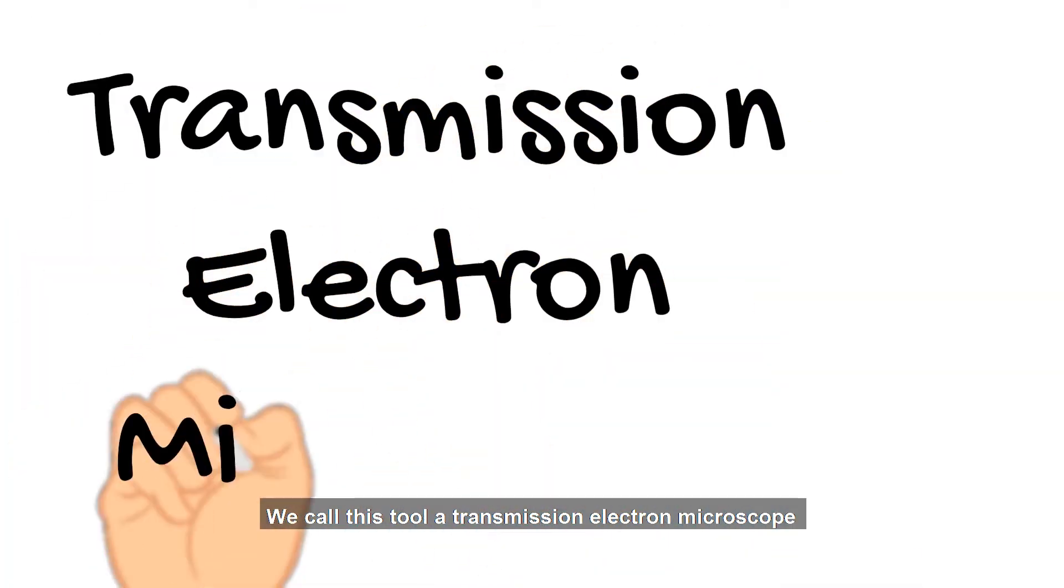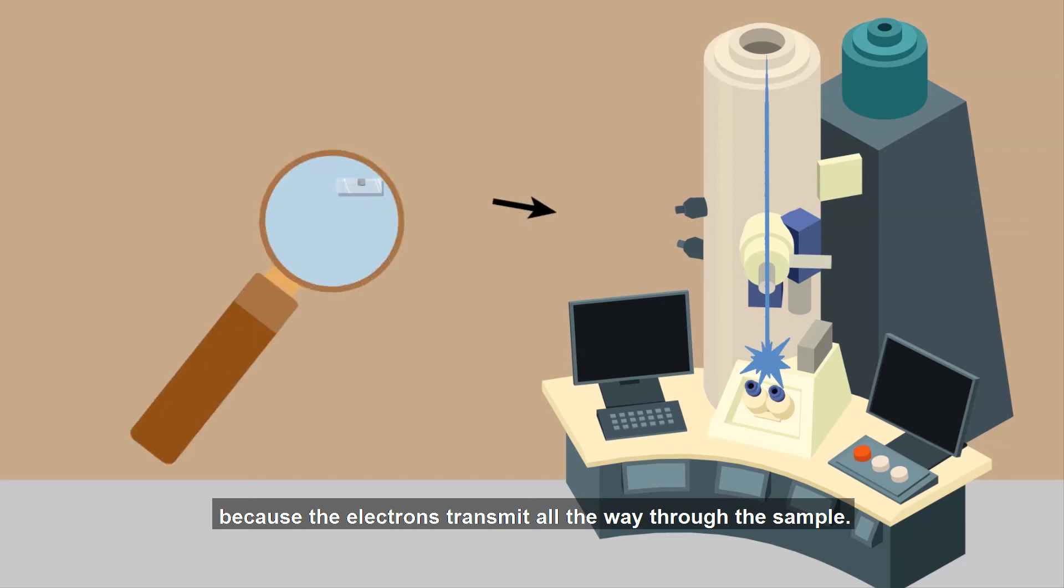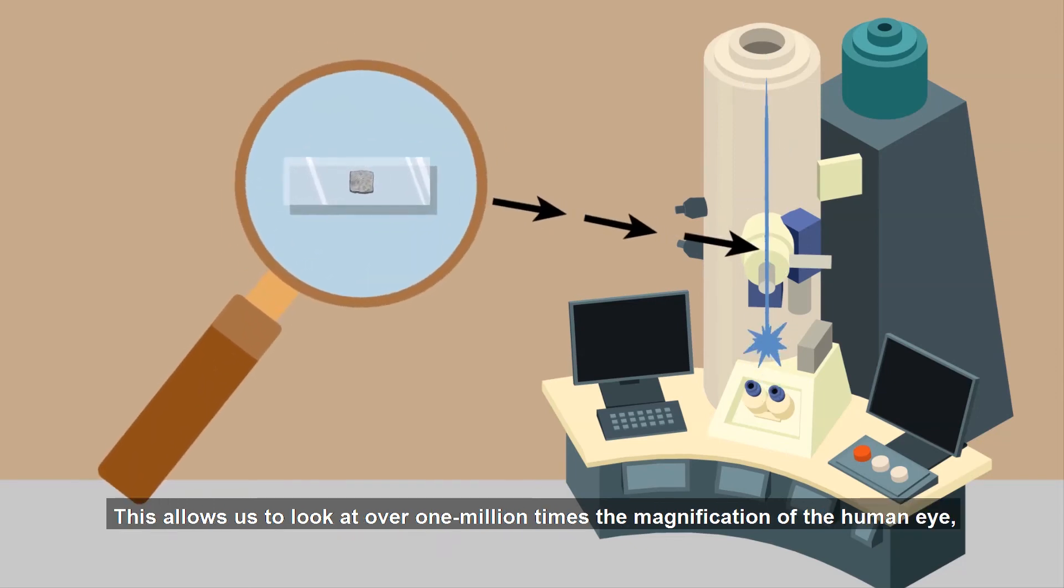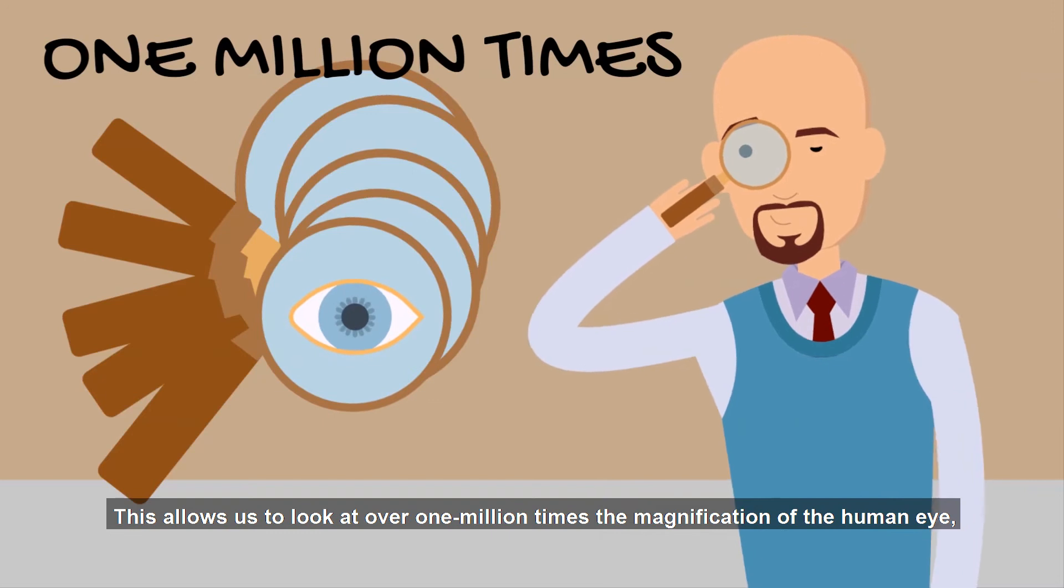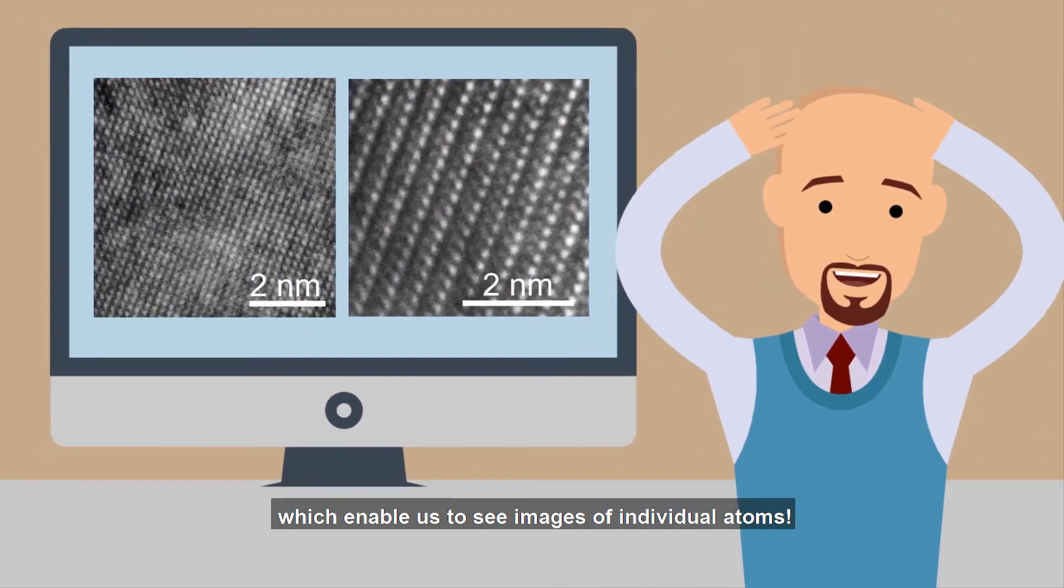We call this tool a transmission electron microscope because the electrons transmit all the way through the sample. This allows us to look at over one million times the magnification of the human eye, which enables us to see images of individual atoms.